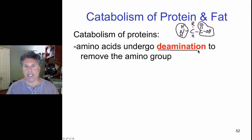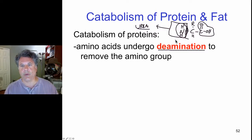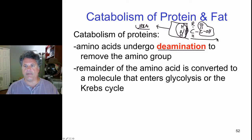Each individual amino acid can undergo deamination, meaning breaking off of the amino group. The nitrogen-containing amino groups are usually produced as a waste product, urea, that is excreted. After that, the remainder of the amino acids can be converted into molecules that enter glycolysis or the Krebs cycle.